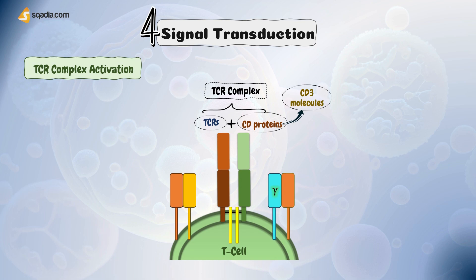The associated signaling module is the CD3 complex, which is made of CD3 gamma, CD3 delta, CD3 epsilon, and CD3 zeta chains. As shown in this arrangement, the complex closely associates with the TCR and serves as a signaling module. Upon TCR engagement, the CD3 complex is phosphorylated by lymphocyte-specific protein tyrosine kinase, or LCK, which initiates signal transduction.